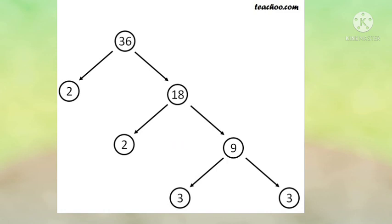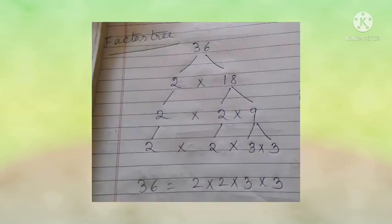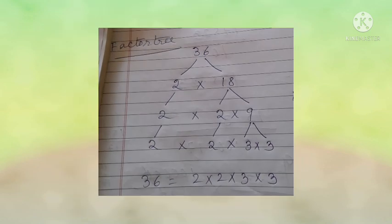In the next line 2 will remain the same, and 18 will be divided into 2 and 9. The 2s remain the same. Then we divide 9 into 3 and 3. So in the last line you see 2 × 2 × 3 × 3 — all are prime numbers. That means 36 equals 2 × 2 × 3 × 3. This is called the Factor Tree method.